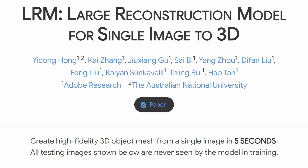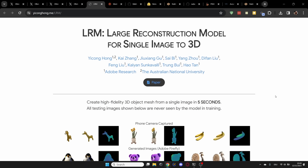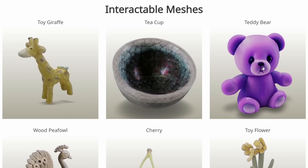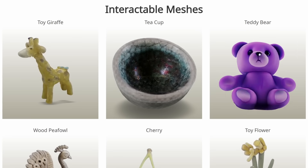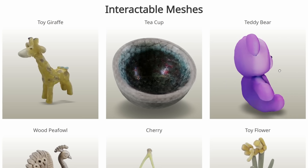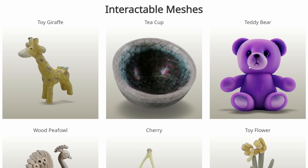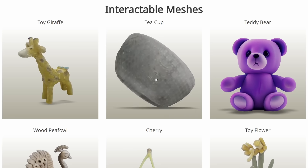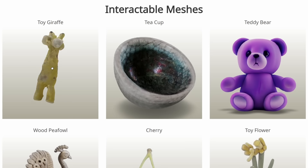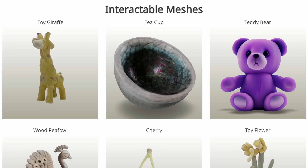The first news of today: large reconstruction model for single image to 3D. The render process is only taking five seconds and it is really stunning how good the quality is. When you scroll down on the page, you can actually click and move these 3D models to see them from all sides. Even though this is just a single image, it has a front side and a back side, so the AI can figure out the full shape from just one image, then create a 3D model and also texture that 3D model.